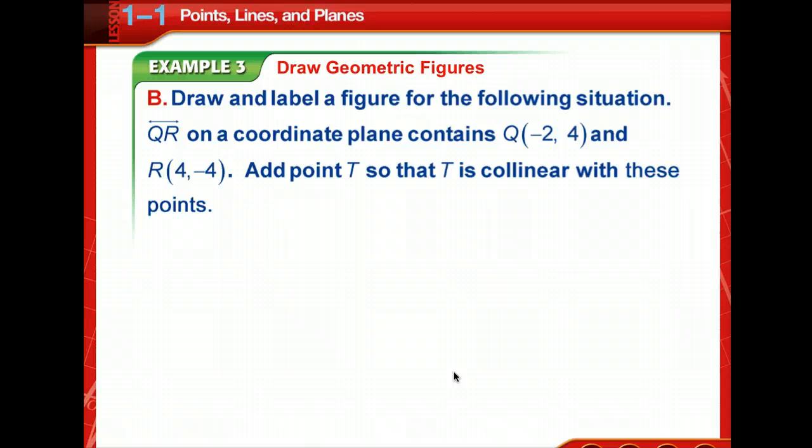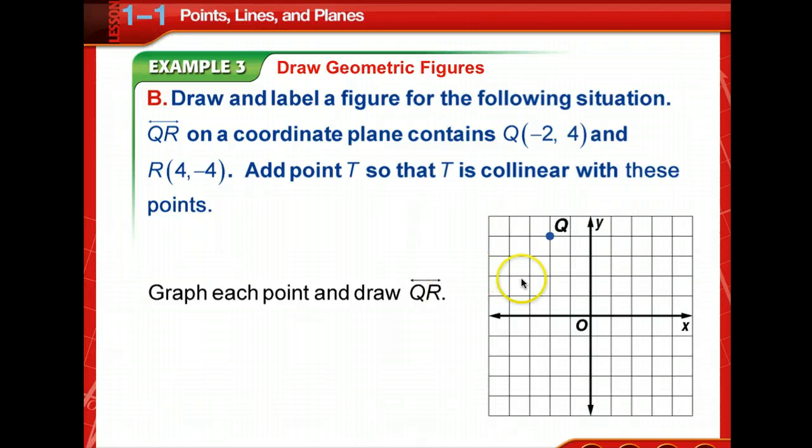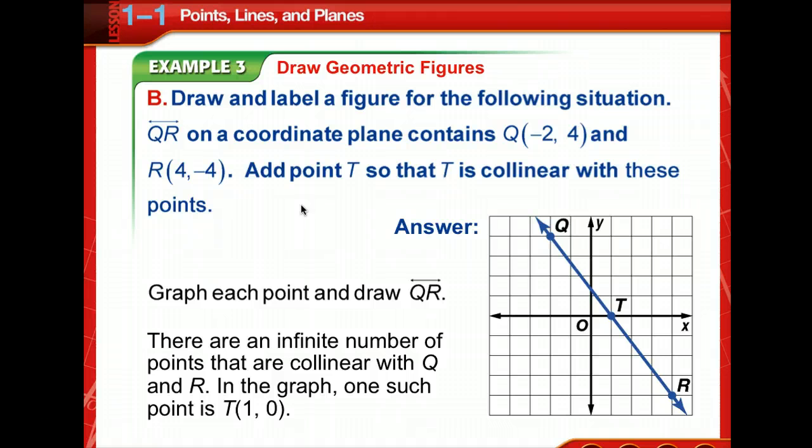Now we're giving us another one to try. Draw and label a figure for the following situation. We have line QR and it's on a coordinate plane. Okay. So we know we're going to have to draw a coordinate plane. And so we're going to have to plot point Q at negative 2, 4. And we're going to plot QR at 4, negative 4. Draw and label a figure. Okay. And so we know we're drawing a line. So we're going to have to put a line through that. And we're going to add point T so that it's collinear. So T has to fall on this line somewhere. I would put it where it intersects because you have to figure out what the point is. So you want it where it's at a crossways. And it looks like it crosses the X axis right there. So that would be a good point to choose. Okay. 1, 0. Excellent.